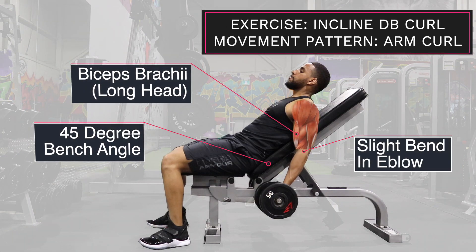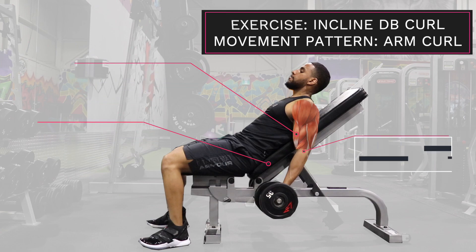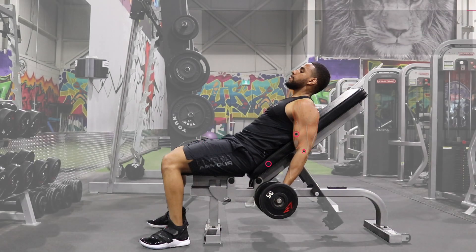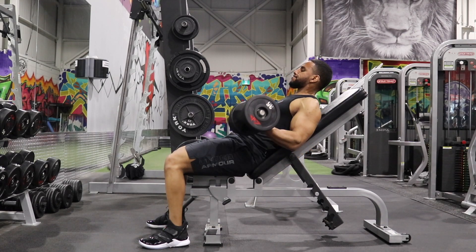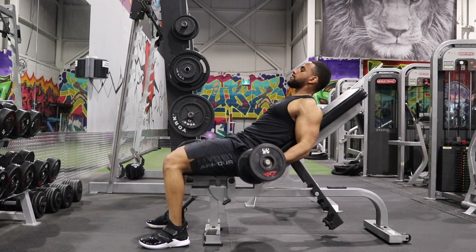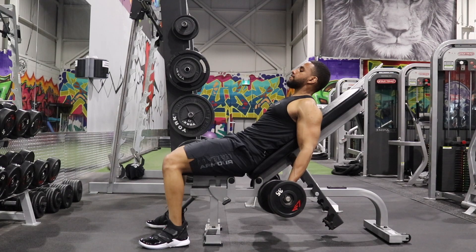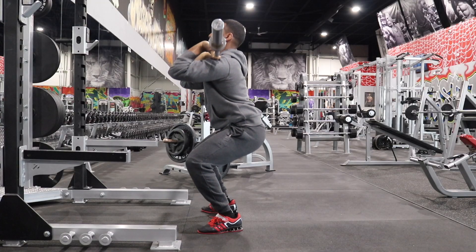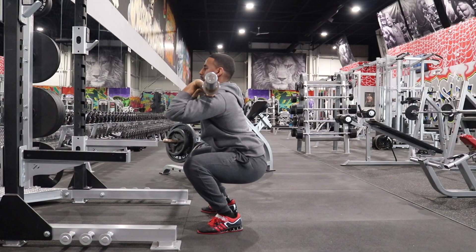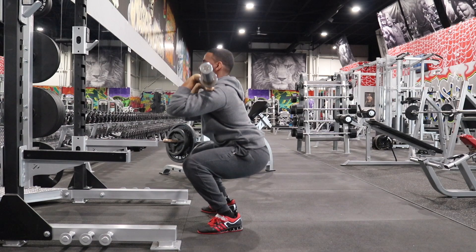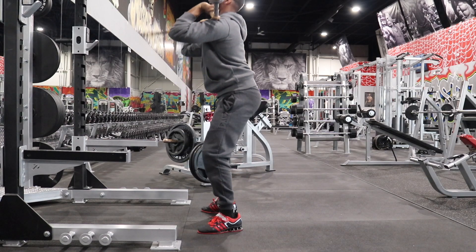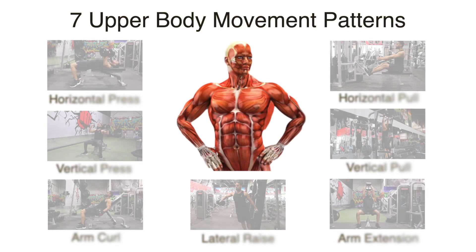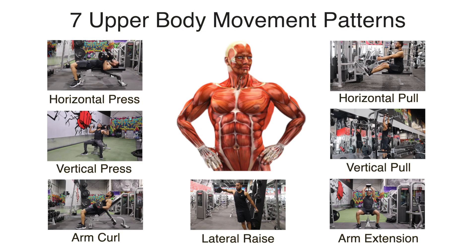Instead of only giving you a list of exercises to do, I'm also going to give you the seven key upper body movement patterns that every program must include. That way, if you have to make changes or adjustments to the exercises, you'll be able to do so with good understanding. And in a later video, we'll talk about the key lower body movement patterns that every program must include. So let's start with an overview of what these seven movement patterns are.